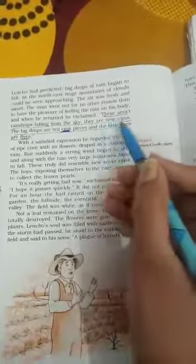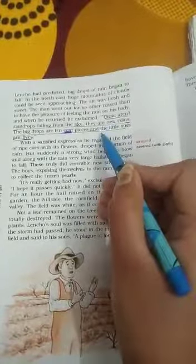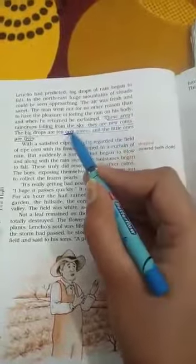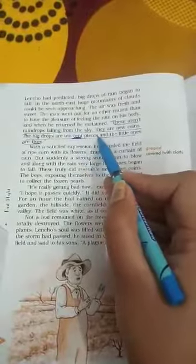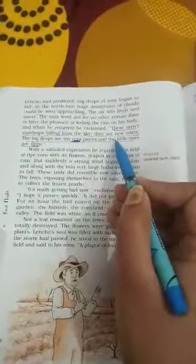So for him, the rain was bringing money. That is why he called large drops of rain 10 cent coins and the little ones are 5 cent coins.